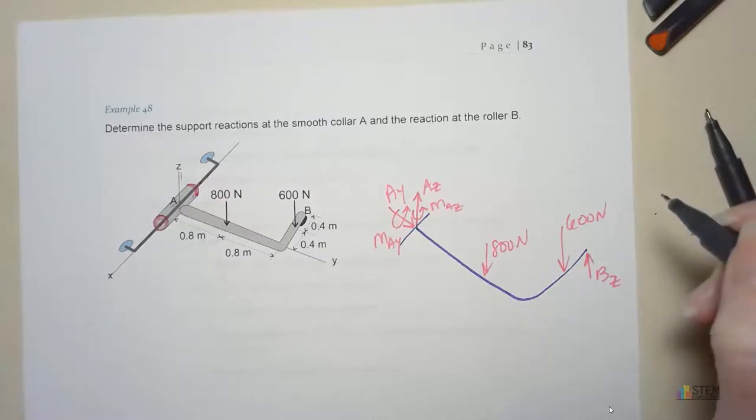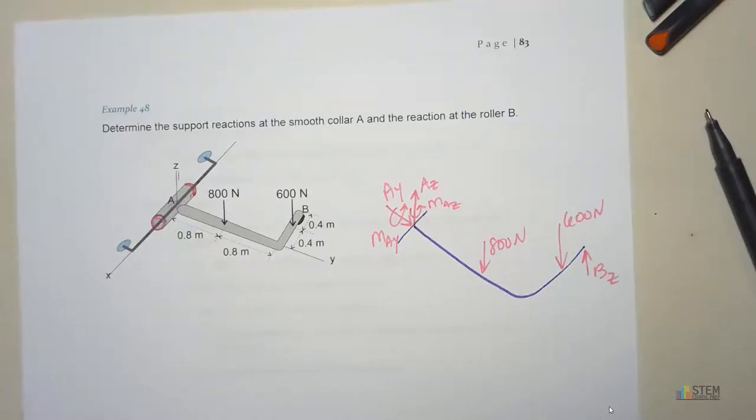Now that's going to be our free body diagram. We weren't given the weight or anything, so we'll leave that off. And now we can get started with our equilibrium equations.